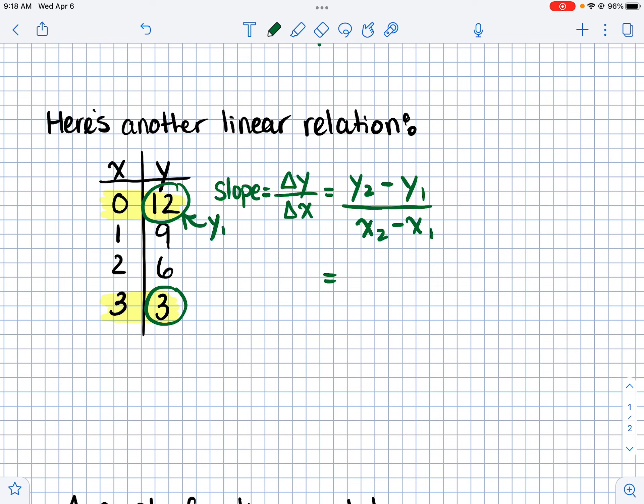So let's say I call this y1, and let's say I call this y2. So I'm going to do 3 minus 12 over, I have to call this x1. Since I called this guy 12, since I called it y1, its x-coordinate has to be x1. So they have to be the same one. And therefore, this guy would be x2, because the other 3 is y2. So then I'll subtract those. So x2 minus x1. So 3 minus 0. And let's see what that equals. So 3 minus 12 would be negative 9. And 3 minus nothing would be 3. So I have negative 9 over 3, which I could simplify to just negative 3. So the slope of this linear relation is negative 3, which I can easily see that it's going down by 3 every time.